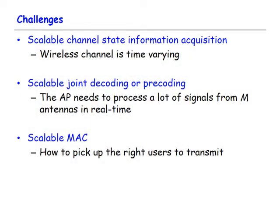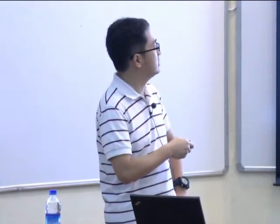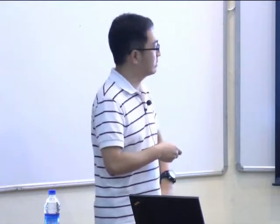There are three main challenges. First, in order to do precoding, the sender must obtain channel state information — which is not easy because the channel is varying and changing all the time. Second, if we really want a large-scale MIMO system, the joint processing consumes a lot of computation — how can we build an access point that does this signal processing in real time? Third, it's about MAC: picking different users for a MIMO transmission significantly affects scalability. If you pick the wrong mobile users and group them in a MIMO transmission, it may not increase capacity.